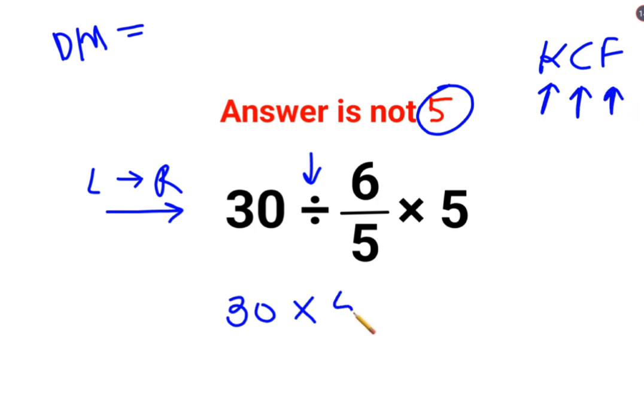The reciprocal of 6/5 is 5/6, multiplied by 5. So the 1s cancel and the 5s cancel, so you are left with 5 multiplied by 5 multiplied by 5. So the answer for this question is supposed to be 125.